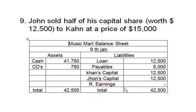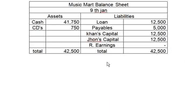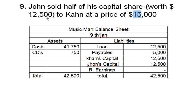On the asset side nothing changes. On the liability side, John's capital of 25,000 is split: John's capital becomes 12,500 and Khan's capital is also 12,500. You might ask about the difference between 15,000 and 12,500 — that 2,500 profit was made by John, not by Music Mart. Remember the entity concept: Music Mart's accounts are separate from John's accounts, so this profit does not appear in the company's balance sheet.